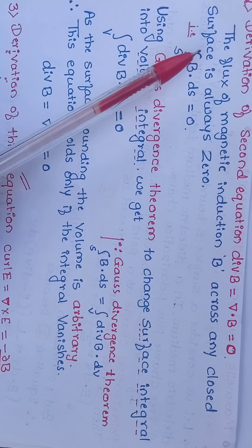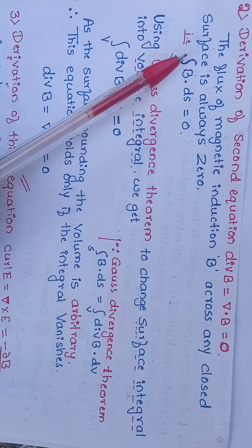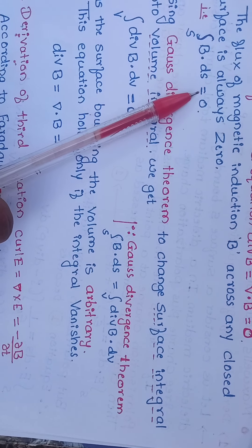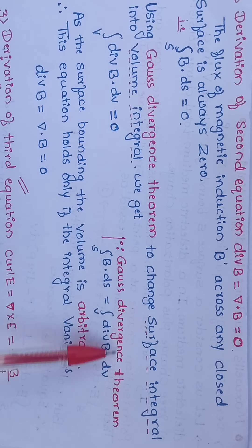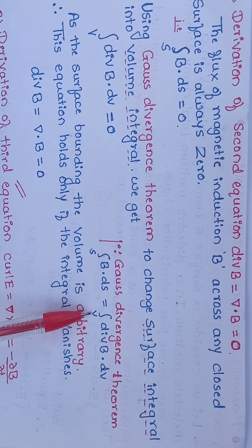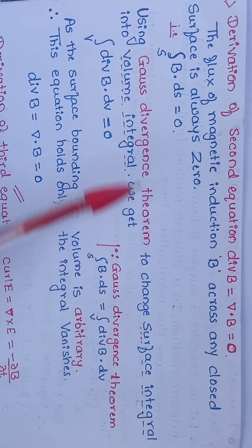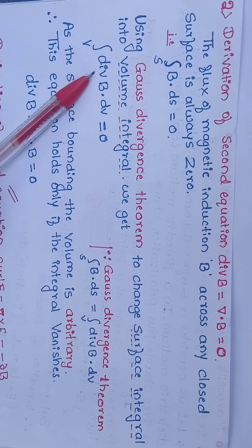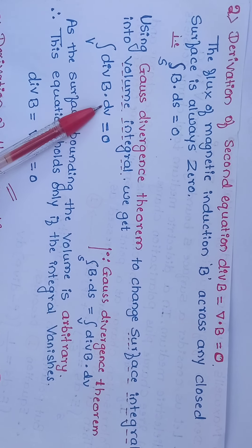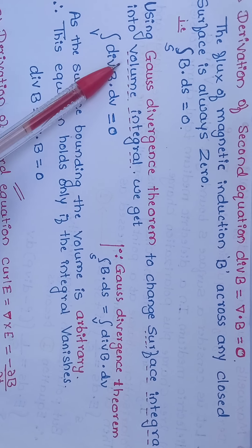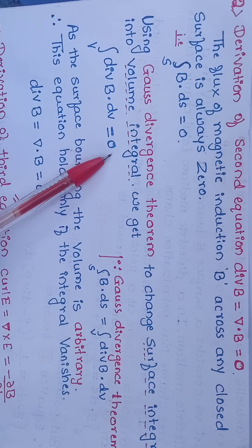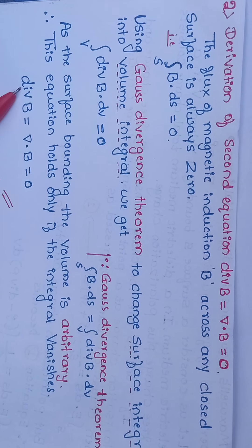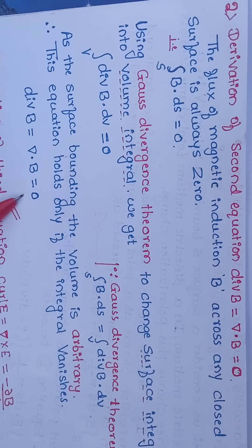That is, the surface integral of B dot dS equals 0. Using the Gauss divergence theorem to change the surface integral into volume integral, we get the volume integral of divergence of B dv equals 0. Removing the integration gives divergence of B equal to 0, that is del dot B equal to 0. This is Maxwell's second equation in differential form.